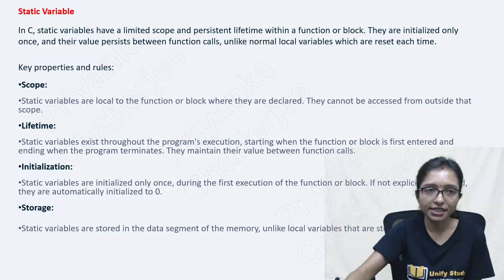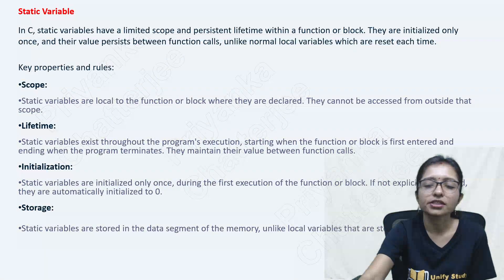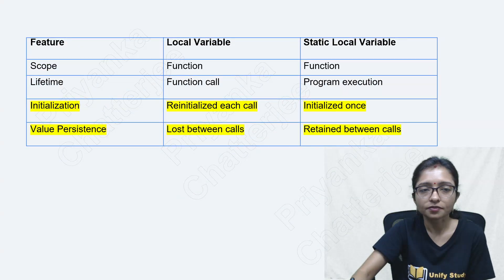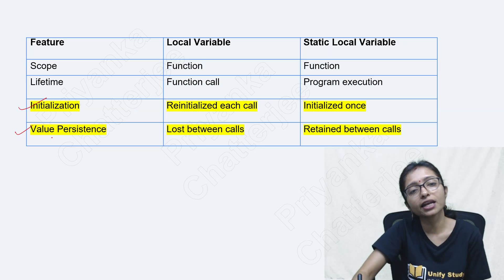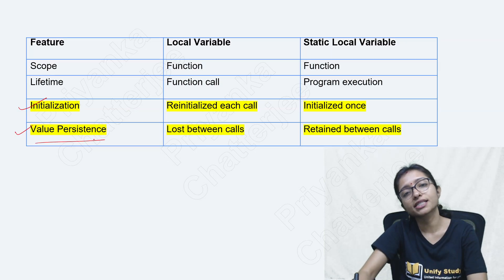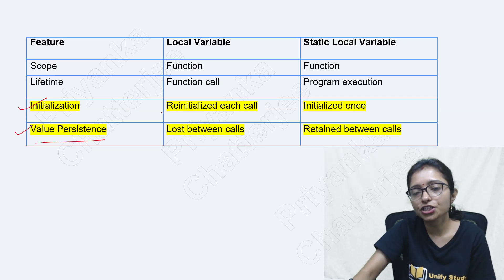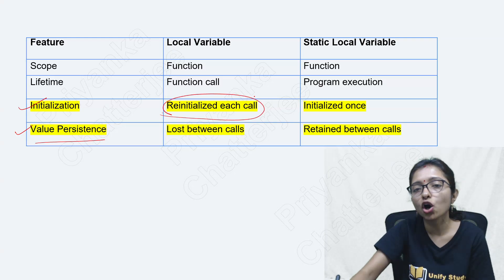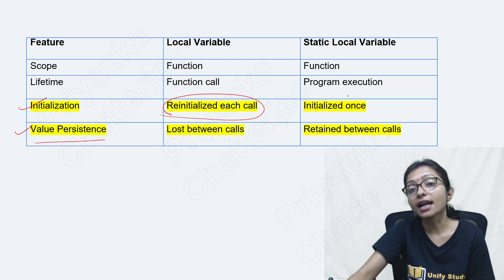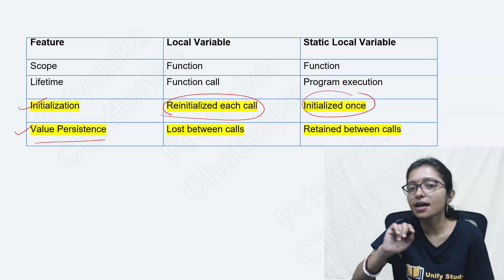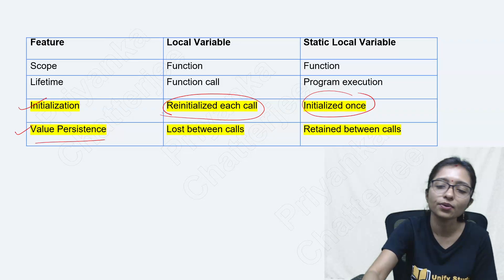Now let's see the main difference. The main difference is initialization and value persistence. Local variable initialization will be reinitialized in each call. Static variable is initialized only once. I will take an example so you will understand.